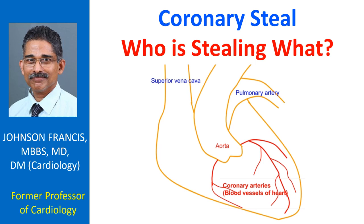Steal occurs when there is obstruction to one vessel which is connected to another. Coming back to coronary steal, it occurs when certain types of vasodilators are given. The classical example is a drug called Dipyridamol. Dipyridamol is both an antiplatelet drug and a vasodilator. When it is given to a person with partial obstruction to a coronary artery, all the coronary vessels dilate.